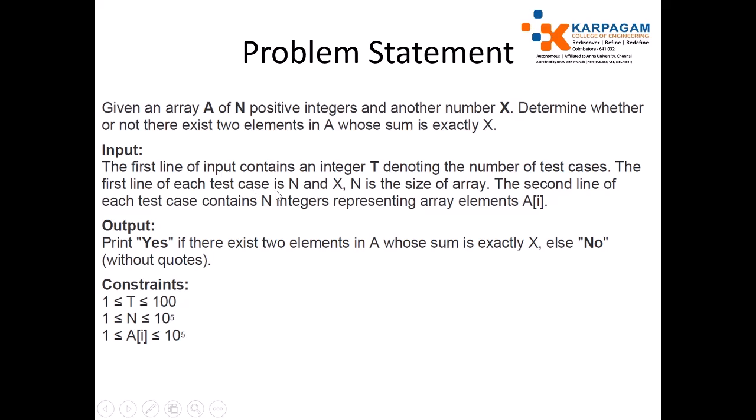The first line of each test case is N and X, where N is the size of array. The second line of each test case contains N integers representing the array elements A[i], where i is ranging from 0 to N minus 1. Our output should be yes if there exist two elements in A whose sum is exactly X, else you have to print no.